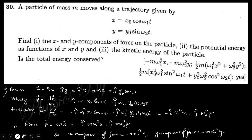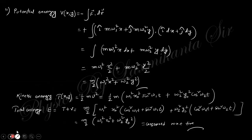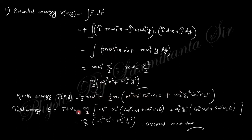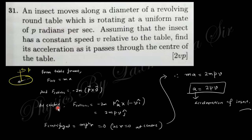The potential energy is the work done: force dot displacement. Multiplying force and displacement and integrating gives the potential energy. The kinetic energy is half m*v². The total energy is the sum of these two, which turns out to be constant with respect to time.